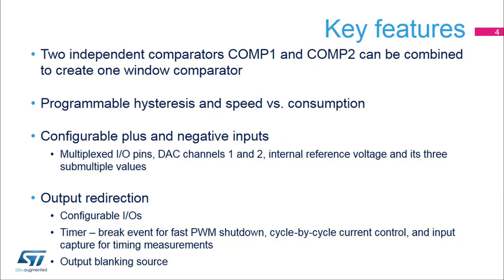The two integrated comparators can be combined into a single window comparator. The analog properties of the comparator include hysteresis, or a trade-off between speed and power consumption, which are configurable. It offers flexible interconnections of inputs and outputs, allowing a threshold selection of several external and internal inputs such as DAC outputs or internal reference voltage outputs.